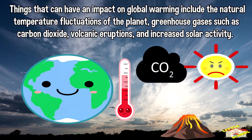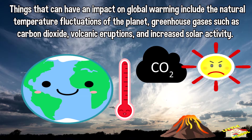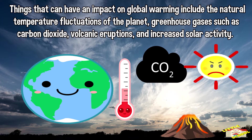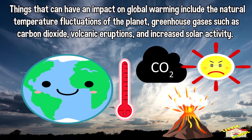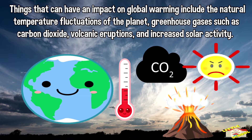Things that can have an impact on global warming include the natural temperature fluctuations of the planet, greenhouse gases such as carbon dioxide, volcanic eruptions, and increased solar activity.